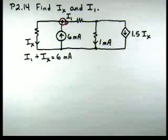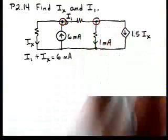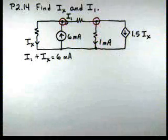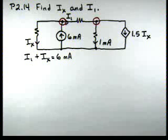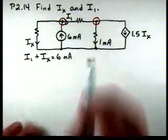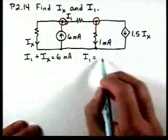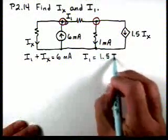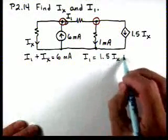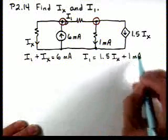Now, we still need to get another equation. Let's apply Kirchhoff's current law at that node. And again, we'll sum currents entering and set it equal to sum of currents leaving. If we do that, we'll have I1 is equal to 1.5 Ix plus 1 milliamp.